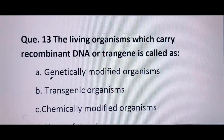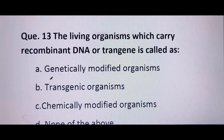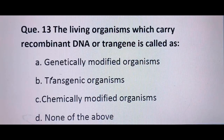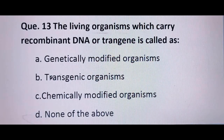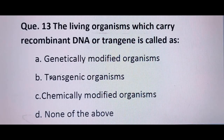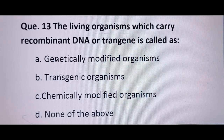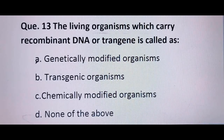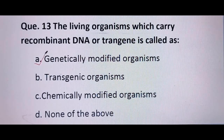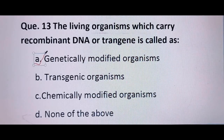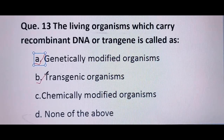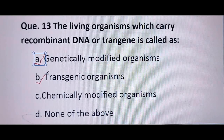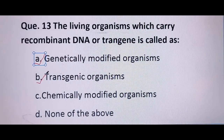Next question: living organisms that carry recombinant DNA or a transgene are called — because there are modifications in their genes, they are known as genetically modified organisms, and because of gene transfer, they are transgenic organisms. So both A and B are the correct answers.